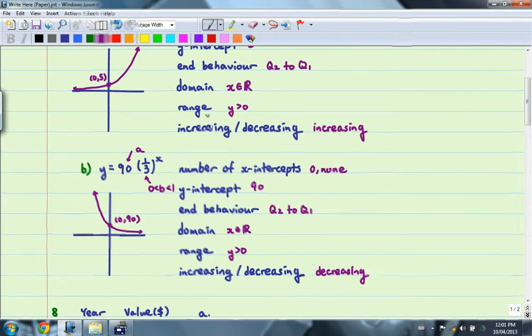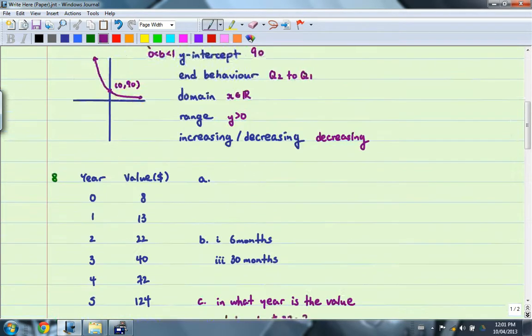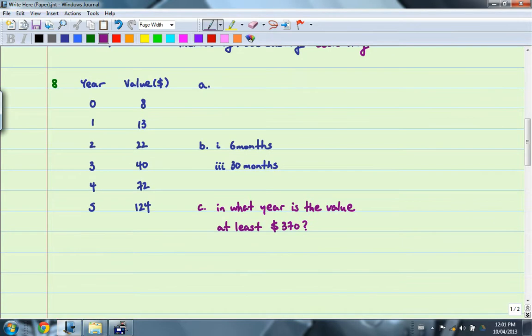Moving on to number 8. Number 8 is asking about Kevin, who purchased his favorite hockey card for $8 in 2005. He's been tracking the value of the hockey card every year since he bought it. And here are the years and the value of the card.